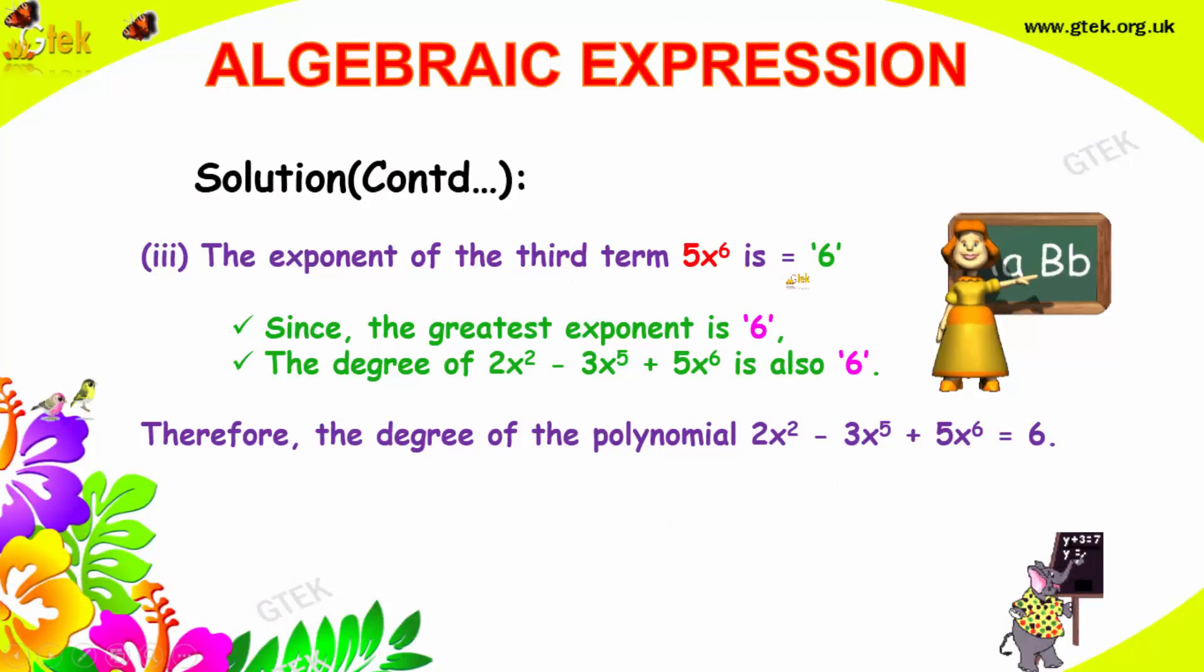The greatest exponent is 6. The degree of the entire polynomial 2x² minus 3x power 5 plus 5x power 6 is 6. This is the degree of the polynomial.